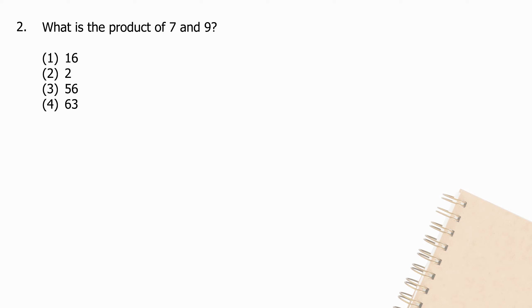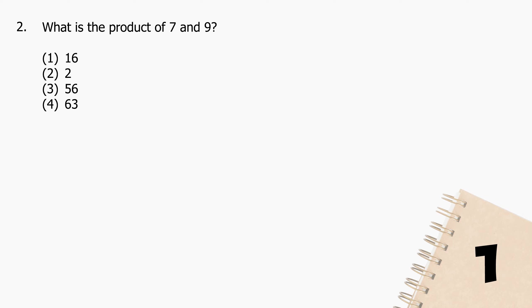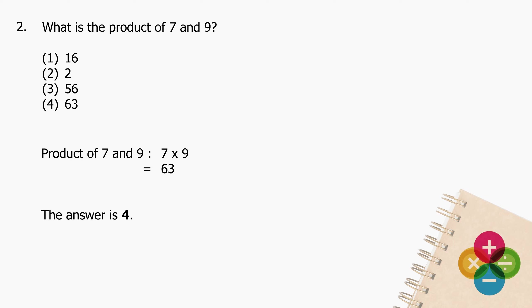Question 2: What is the product of 7 and 9? The product of 7 and 9 — multiply 7 by 9 — and the product is 63. The answer is 4.